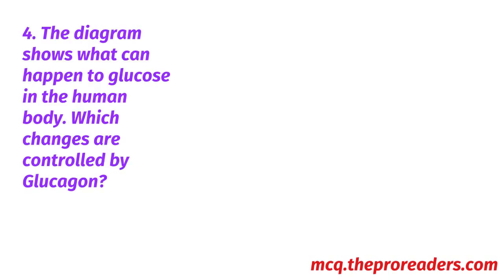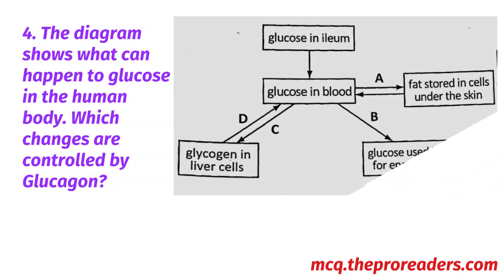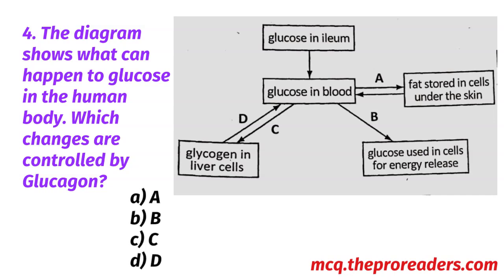The diagram shows what can happen to glucose in the human body. Which changes are controlled by glucagon? Options A, B, C, D. Option D is the correct answer.